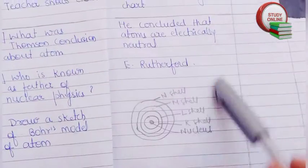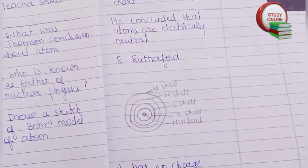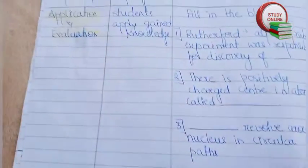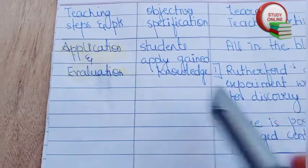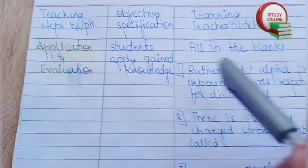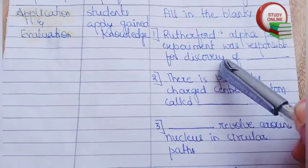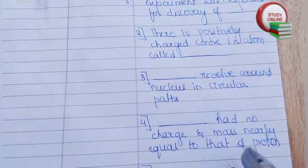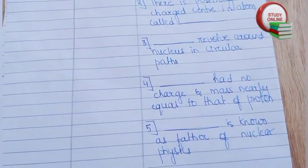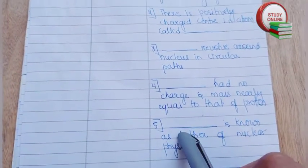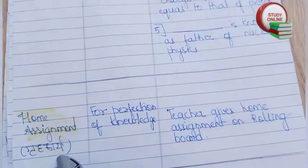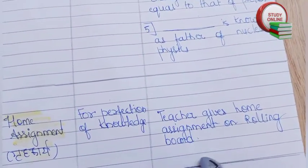Application and evaluation - here you can see fill in the blanks. Five fill in the blanks I have added here. This is home assignment. Teacher gives home assignment on the rolling board.